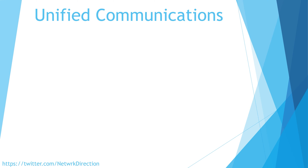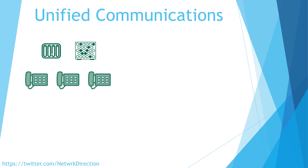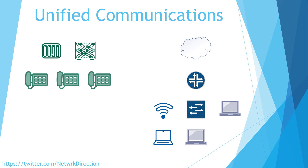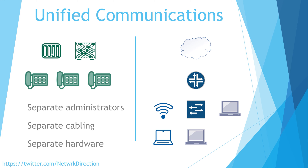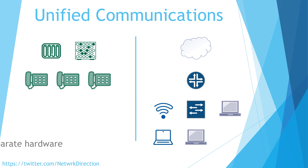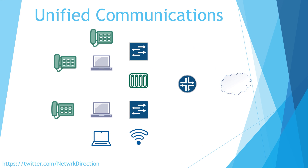Phone networks came first — each desk had a phone when computers were still only for a few users. When data networks caught up, they were entirely independent of the phone network, meaning separate administrators, separate cabling and separate hardware. Eventually we started to see unified communications or converged networks, combining voice and data onto a single network. And that's where we are today, with phones connecting to switches, digital phone and data lines, and IP-enabled PBXs — generally called voice over IP or VoIP.